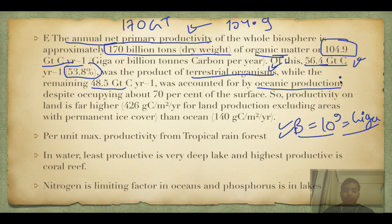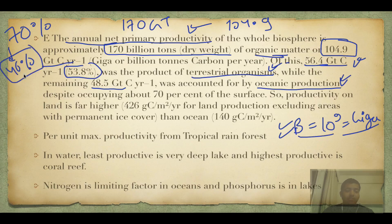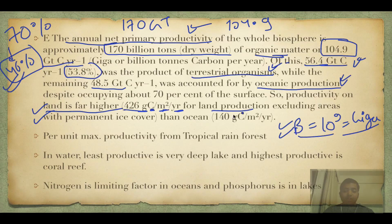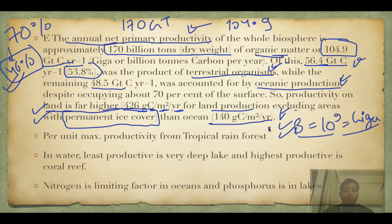Of the 104.9 gigatons, about 56.4 gigatons — 54 percent — was produced by terrestrial organisms, while the remaining 48 gigatons came from oceanic production. Although oceans cover approximately 70 percent of Earth's surface, they produce less than 46 percent of total productivity. This is because land productivity is far higher at 426 grams of carbon per meter square per year, excluding permanently ice-covered areas like Antarctica, while oceans fix only 140 grams of carbon per meter square per year.